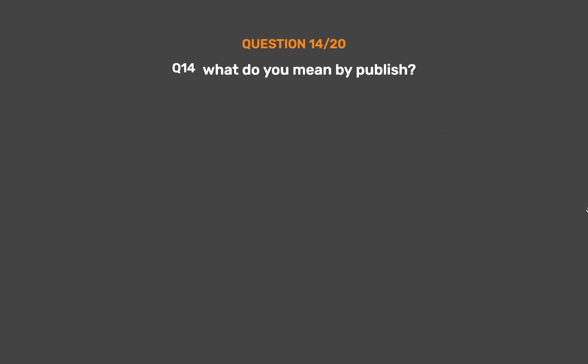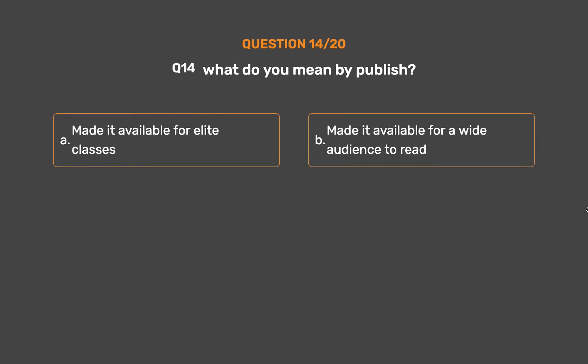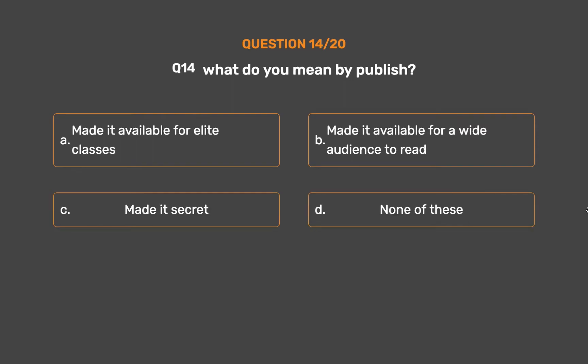Question number 14. What do you mean by publish? Option A: Made it available for elite classes. Option B: Made it available for a wide audience to read. Option C: Made it secret. Option D: None of these.